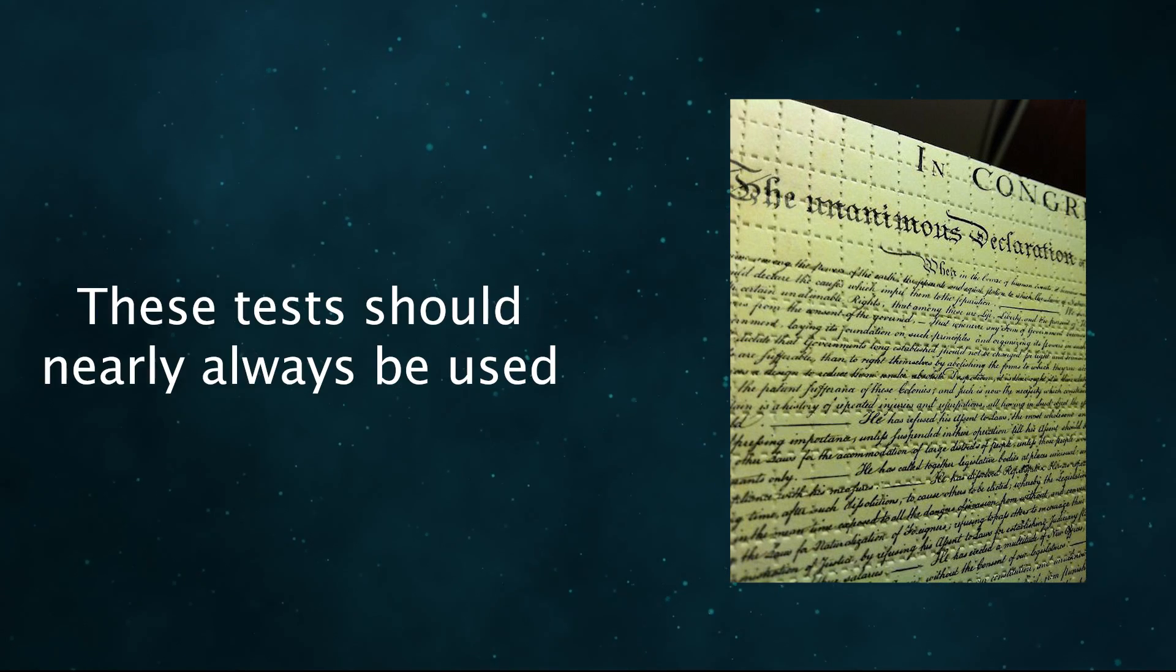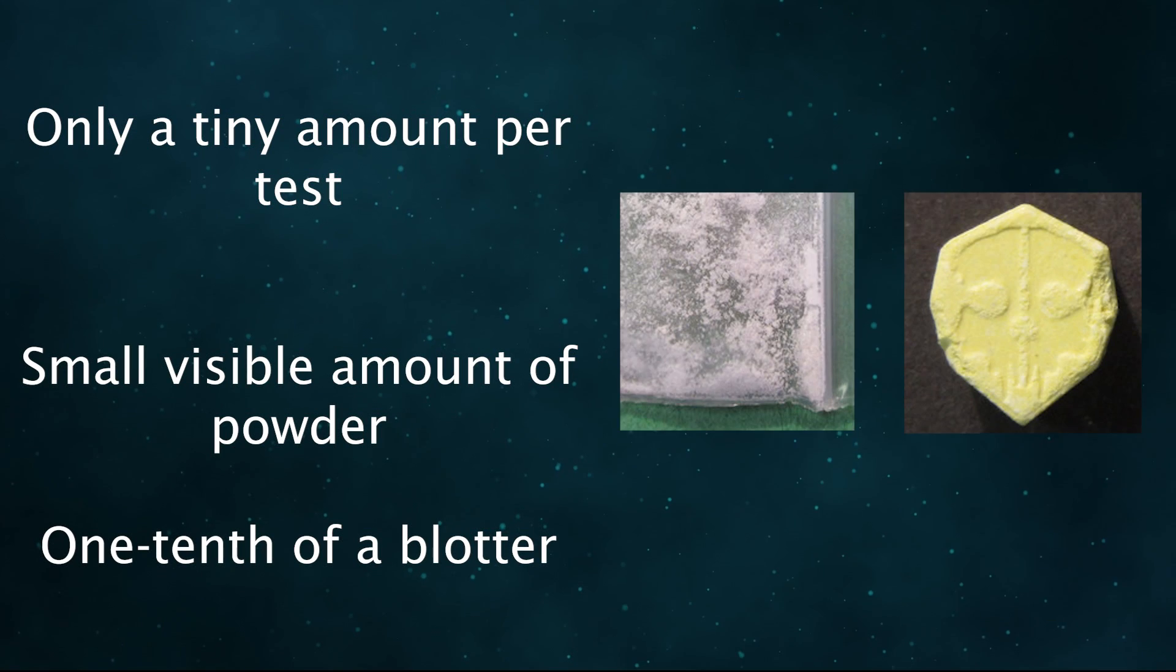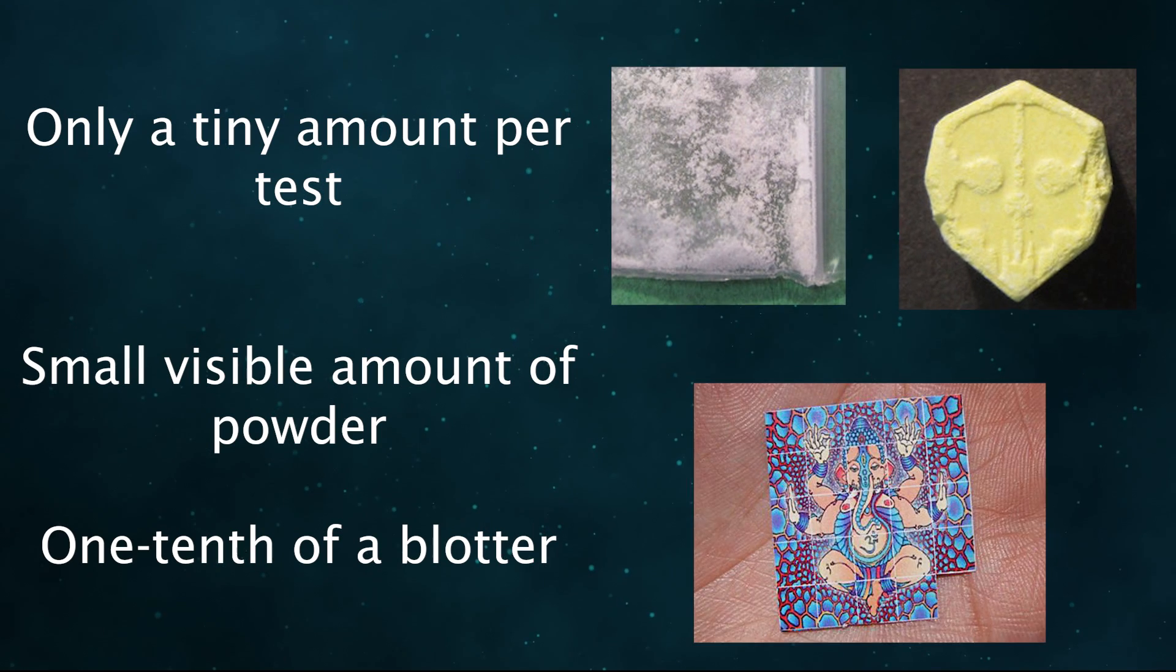Because of how easy it is to use these tests and how high the consequences of not using them can be, I recommend nearly always using reagents with illicit drugs and research chemicals. You only need to use a tiny amount per test. A small visible amount of powder, either from a sample sold as a powder or scraped off a tablet, is all that's required. If you're testing blotter paper, about one-tenth of the blotter should be fine.